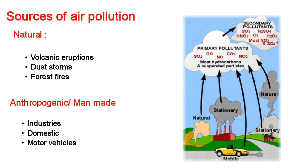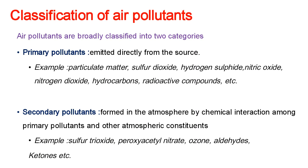The broad classification of sources of air pollution is into natural and anthropogenic sources. Natural sources include volcanic eruptions, dust storms, and forest fires. Anthropogenic sources include industries, domestic activities, and motor vehicles. In this syllabus, we focus on anthropogenic or man-made reasons for air pollution, since natural sources are largely beyond our control.